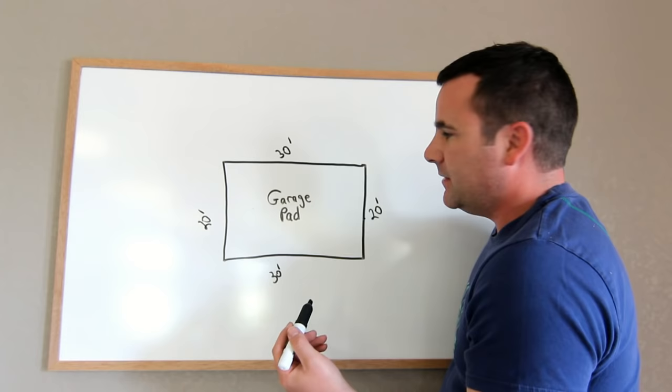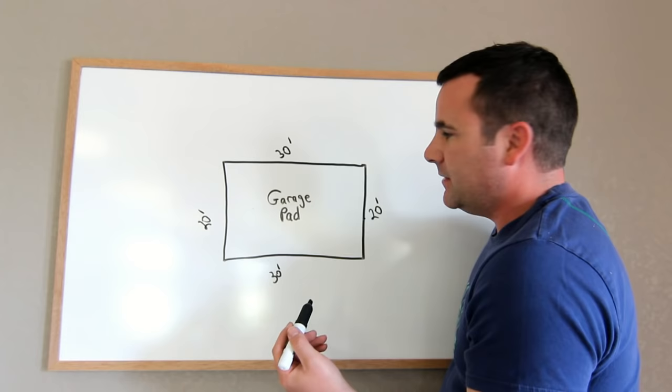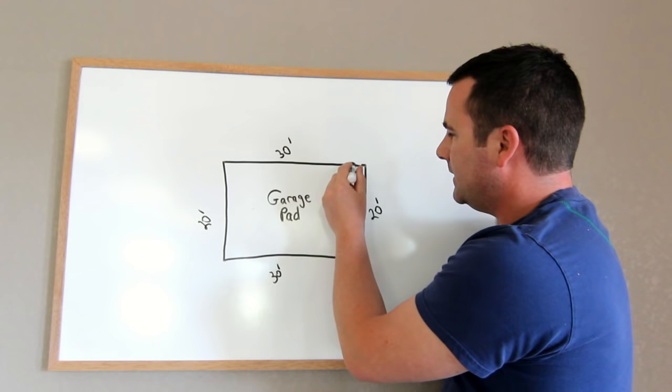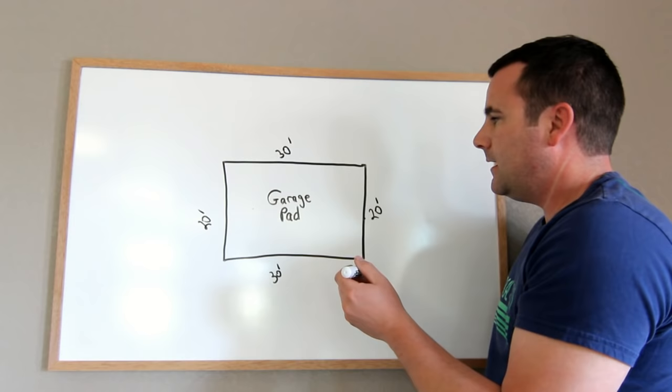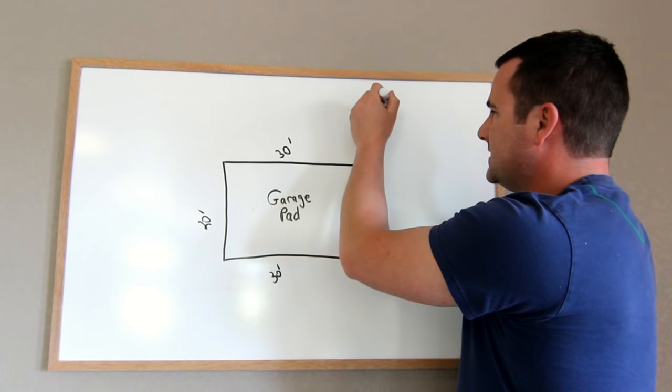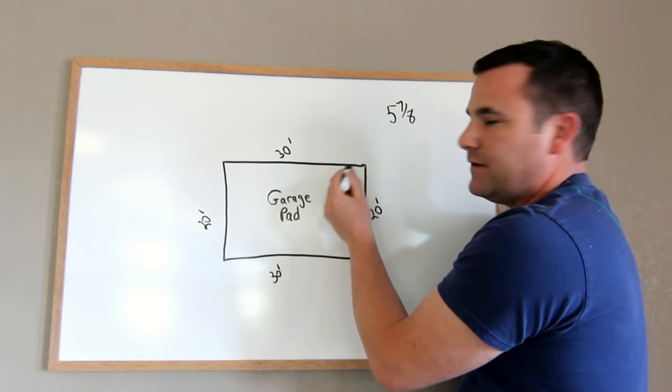Now, because normally what you'd want to do is, if you're building a garage pad, if you're using 2x6 walls, you just measure in from the outside whatever your framing material is. Let's say to be specific, you'd measure in 5 and 7 eighths for a 2x6 wall, and that's because you allow for your 3 eighths plywood on the outside, and then your 5 and a half inches for your 2x6.